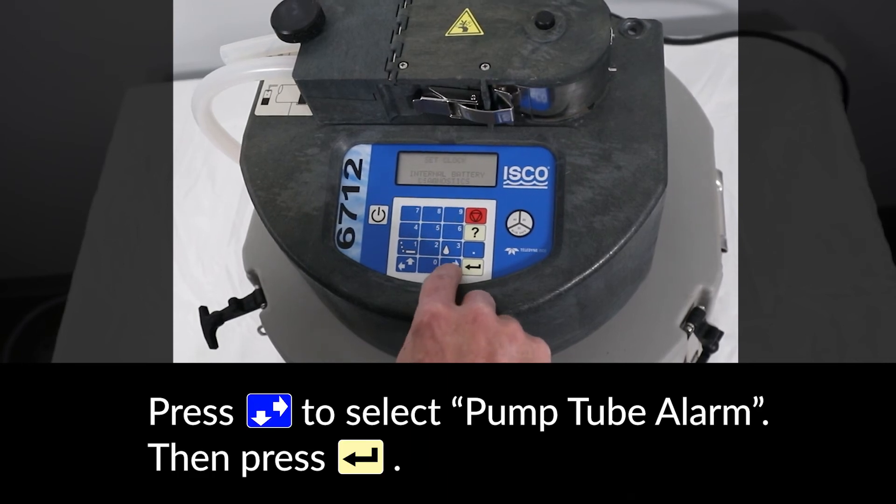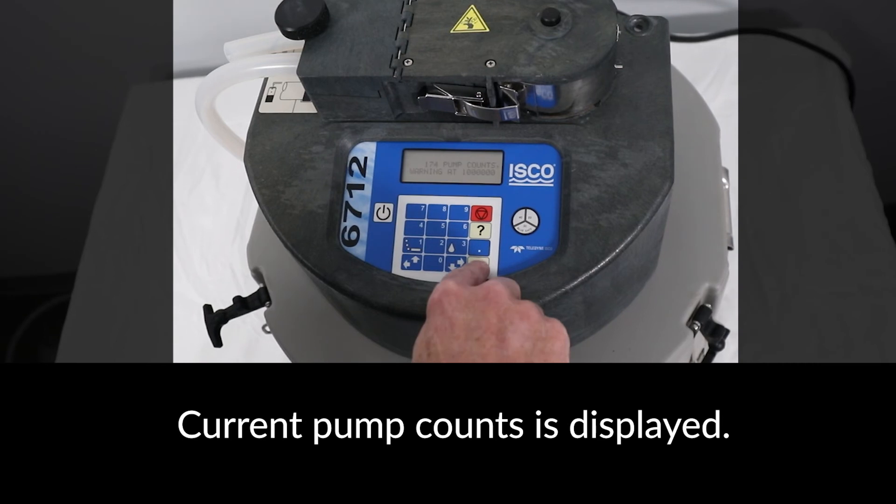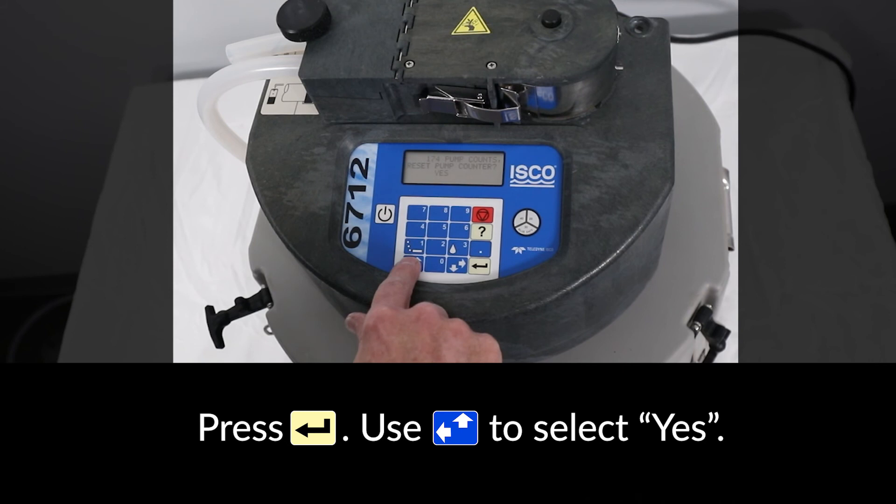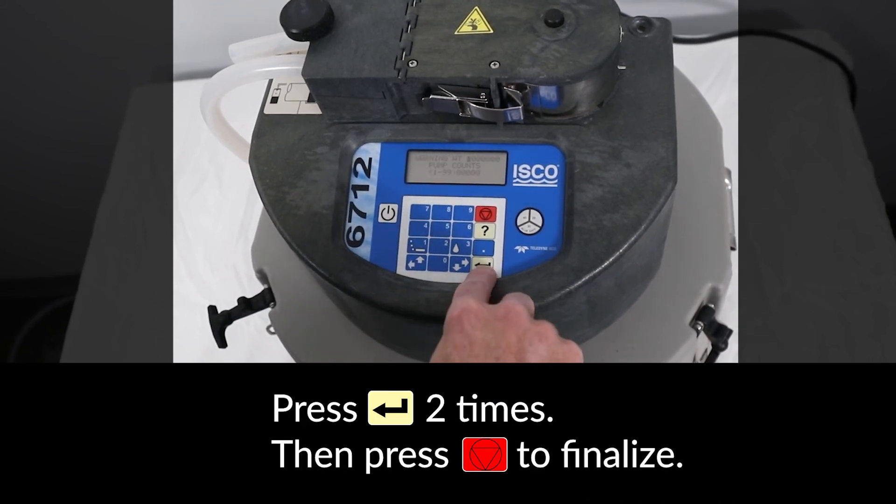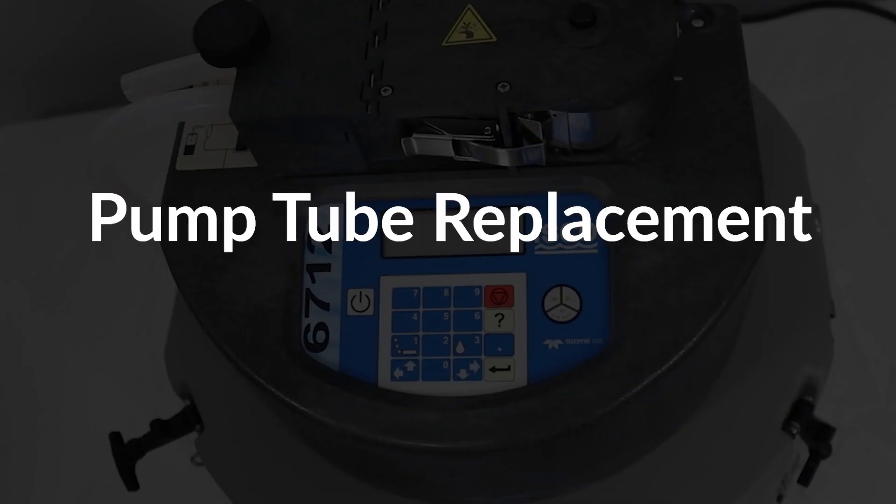Use the arrow keys to select pump tube alarm and press enter. The current pump counts limit is displayed. Press enter then select yes to reset the pump counter. Then press enter two more times followed by the red stop key to finalize the reset. Pump tube replacement is now complete.